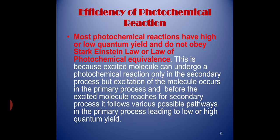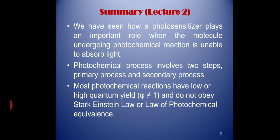Excitation of the molecule occurs in the primary process, and before the excited molecule reaches the secondary process, it follows a number of pathways in the primary process leading to low or high quantum yield. This you will understand better with the help of the Jablonski diagram. Most of the photochemical reactions have low or high quantum yield and do not obey the Stark-Einstein law or the law of photochemical equivalence.